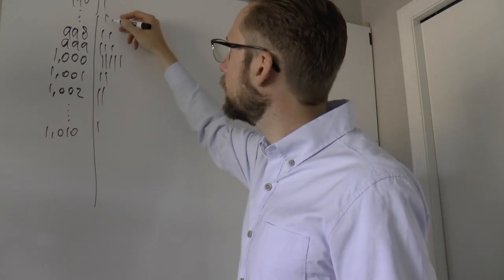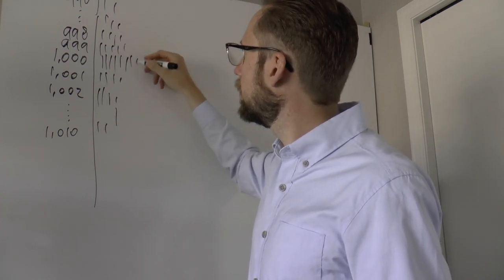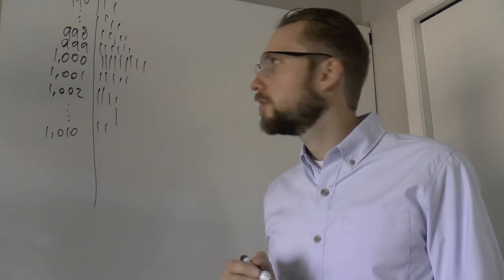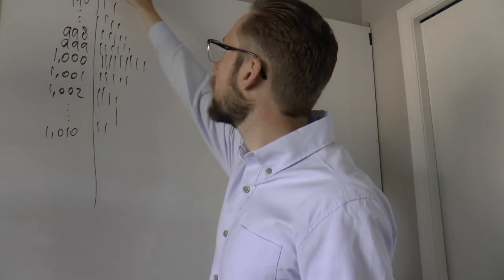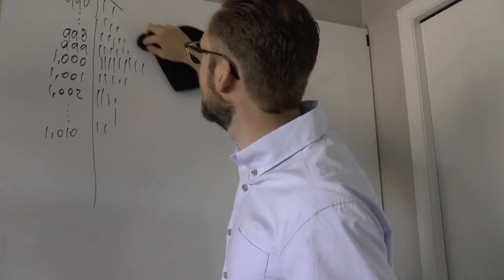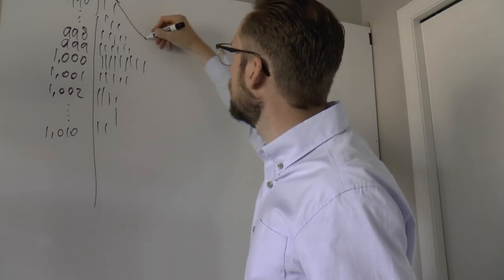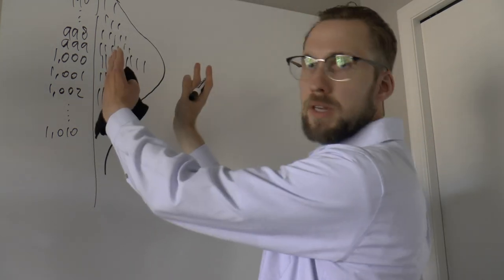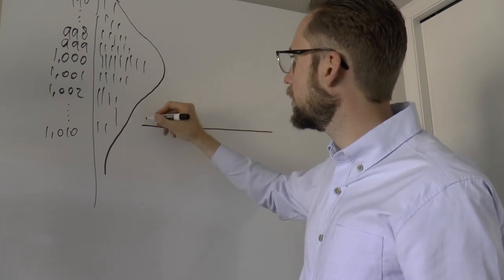If you look at these frequencies, I get something like a histogram. And if I make a curve out of that — which is not easy to draw this way — I'd get a curve shape. Now all I'm going to do is flip this sideways.